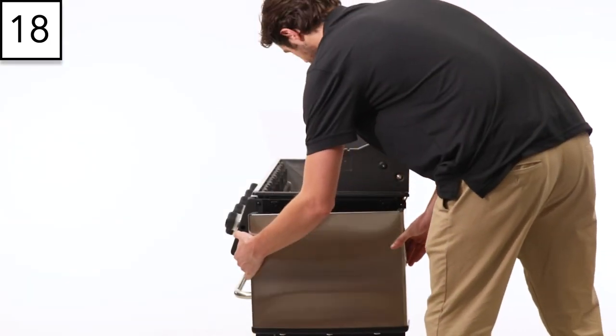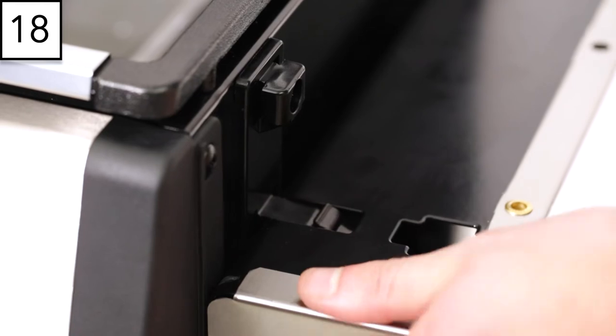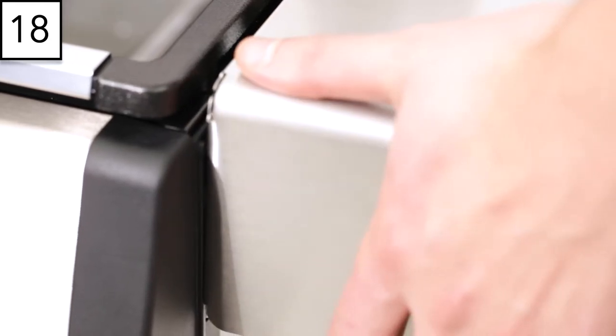Step 18. Attach the right side shelf to the shelf bracket. Fold up and lock in place with the locking tabs.